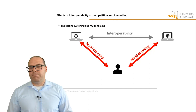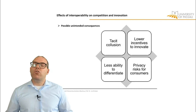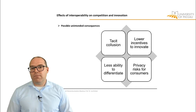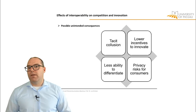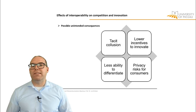But with interoperability there may also be unintended consequences. One concern comes from tacit collusion: if two content and service providers work closely together and interoperate with each other, they might have a tendency to collude more tacitly. It might also lower firms' incentives to innovate, because they cannot evade competition as easily and cannot build their own network without also benefiting another firm. They may also be able to differentiate less, because interoperability requires them to have common interfaces and to obey common standards.